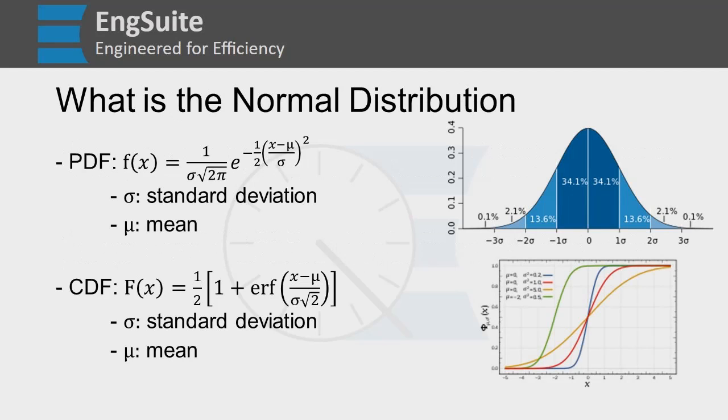The PDF, the probability density function. The PDF is 1 over the standard deviation times the square root of 2π times e to the exponent of negative 1/2 times (x minus μ over σ) squared.